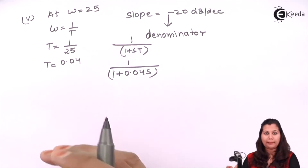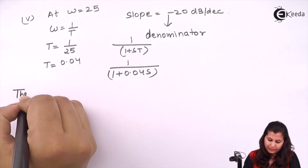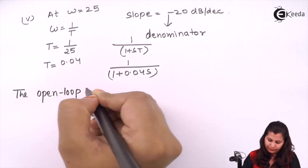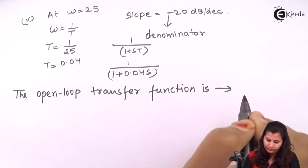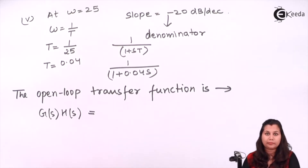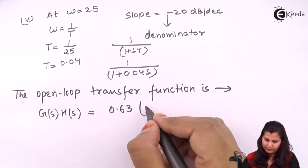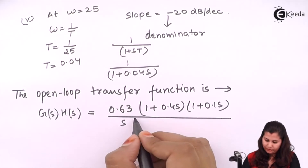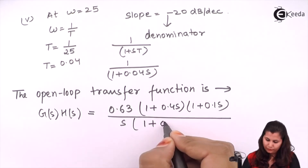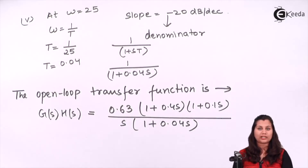Combining all the factors, the open loop transfer function G(s)H(s) is: 0.63 × (1 + 0.4s)(1 + 0.1s) / [s × (1 + 0.04s)]. This is the complete open loop transfer function obtained from the Bode plot. In this way we can determine the open loop transfer function using the Bode plot.